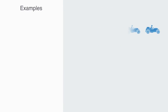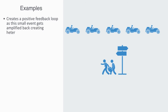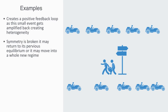Traffic jams are examples of symmetry breaking. We have traffic moving smoothly along, all at the same speed and distance, and then some small event — such as a car needing to slow down as someone crosses the street — creates a positive feedback loop as this small event gets amplified back. During this process, the system becomes heterogeneous: cars are now moving at different speeds and distances between them. The symmetry is broken. It may return to its previous equilibrium, or it may move into a whole new regime as gridlock takes hold.